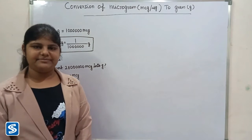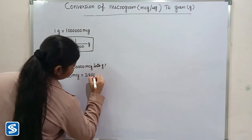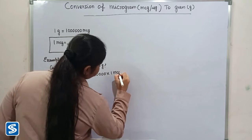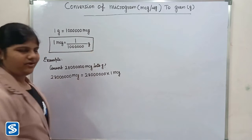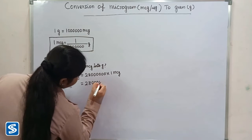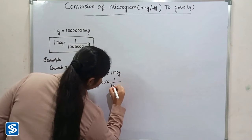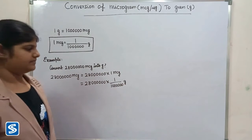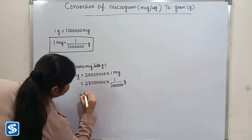28 million micrograms can be written as 28 million multiplied by one microgram. Now we have to substitute one by one million grams in the place of one microgram. So we get 28 million multiplied by one by one million grams. 28 million multiplied by one will be 28 million.